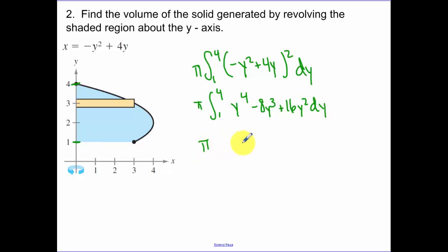Find your integral. And I'm doing this all without a calculator. So I have 1 fifth y to the fifth minus 2y to the fourth plus 16 over 3y to the third. And I'm evaluating from 4 to 1. From 1 to 4.